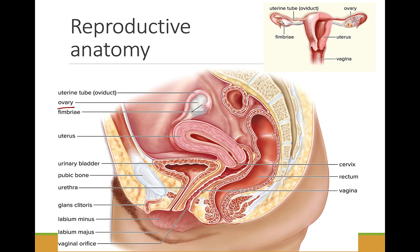Ovulation is when an egg ruptures the ovary and is released into the uterine tube. The uterine tube can also be called the oviduct or the fallopian tube.